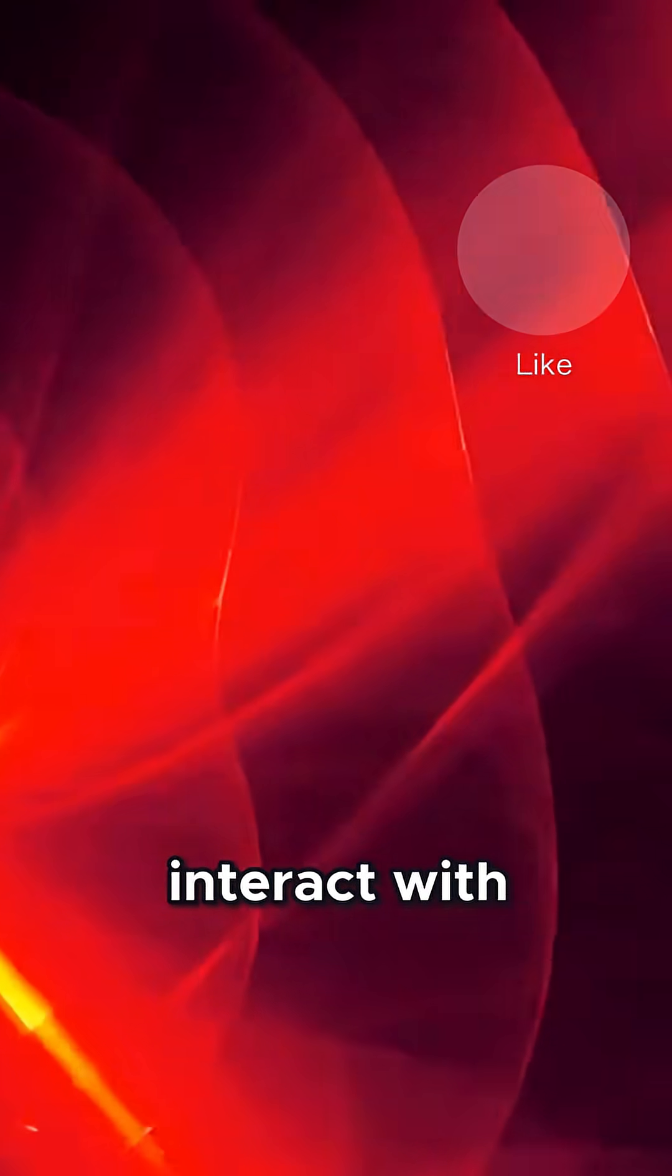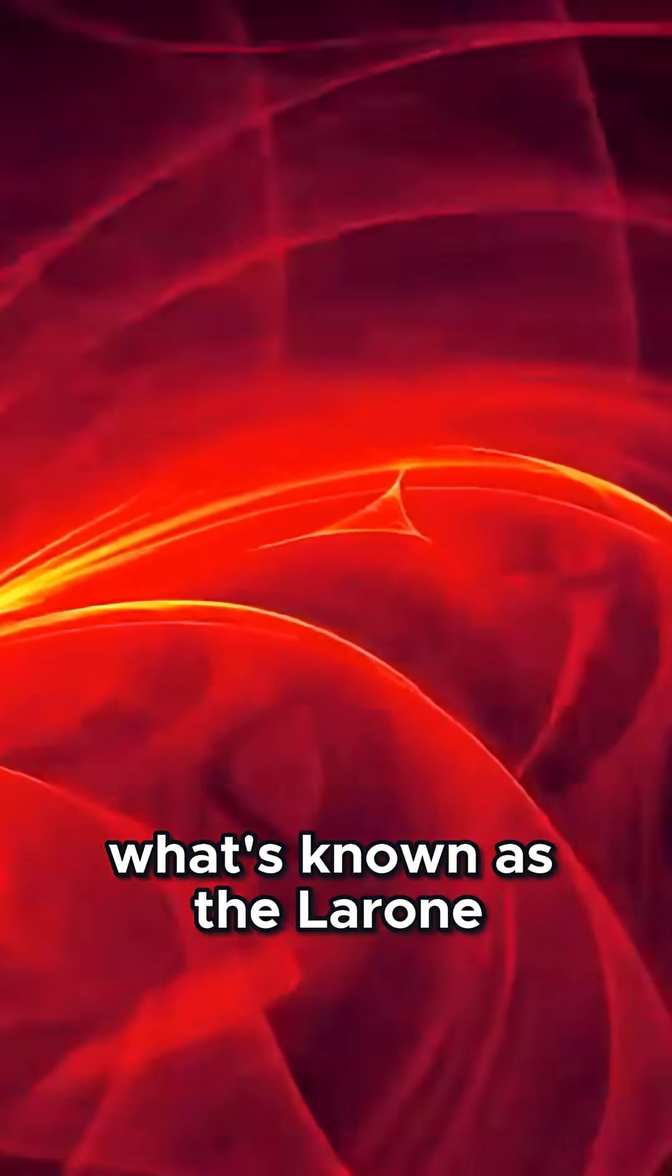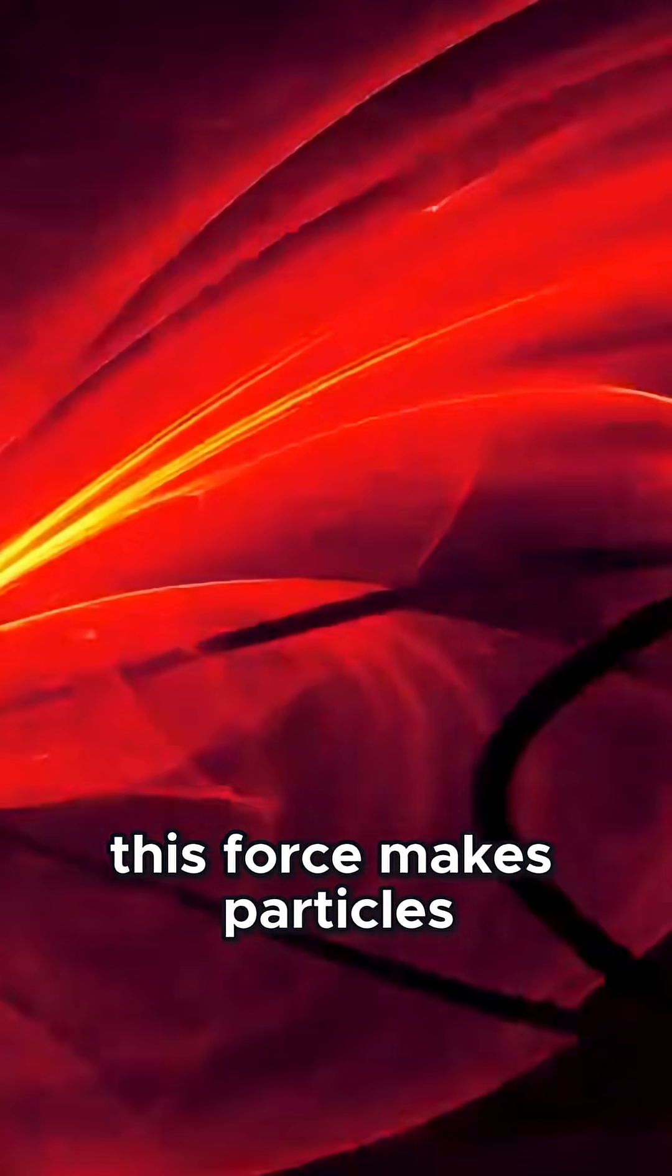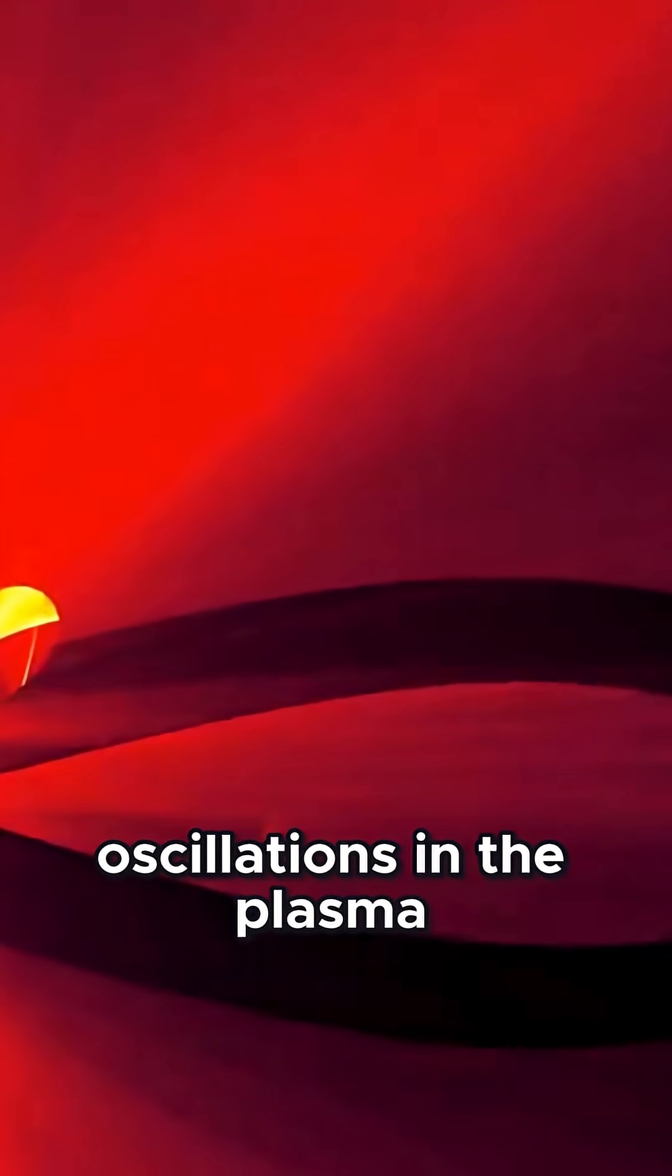In a nutshell, when charged particles in Saturn's rings interact with the plasma in its magnetosphere, they experience what's known as the Lorentz force. This force makes particles spiral around the magnetic field lines and create oscillations in the plasma, also known as plasma waves.